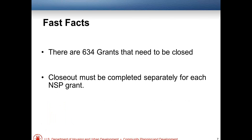Right now we have 634 NSP grants that need to be closed. I want to make this really clear because we get this question a lot: if you have received NSP 1, 2, and 3 — or multiple NSP grants — you have to close each grant separately. You cannot go through the closeout process for NSP 1, 2, and 3 in one set of documents. Everything has to be done separately, unfortunately.